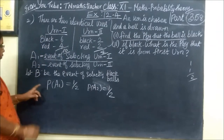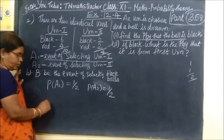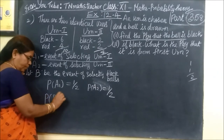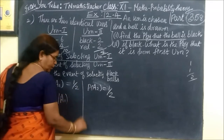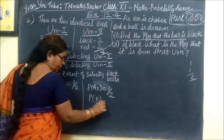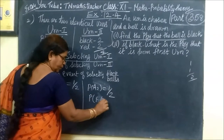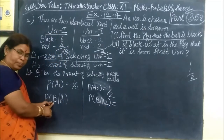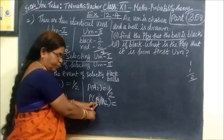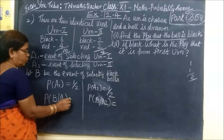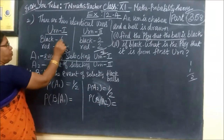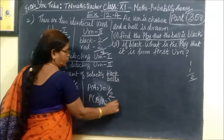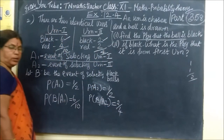Now P(A1) and P(A2) are the events of selecting each urn. P of selecting black ball from A1: black balls are 6, total is 10, so 6 by 10. Then here black balls are 2, total is 4, so P of selecting black ball from A2 is 2 by 4.